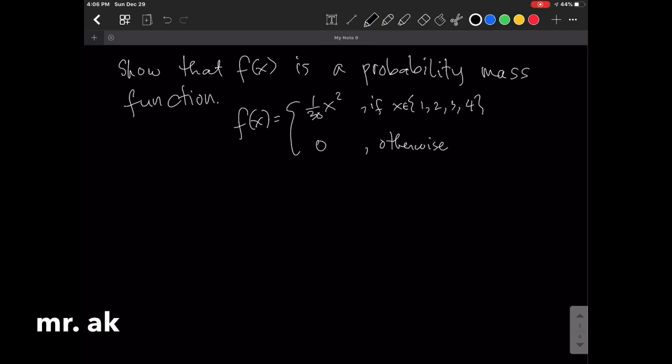Hello mga hackdog, another example for mass function, and this will be the last example for mass function. Show that f of x is a probability mass function, f of x equals 1 over 30 x squared, if x is in 1, 2, 3, and 4, that's the support, 0 otherwise.